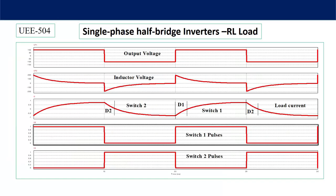In the output voltage waveform, we have positive output voltage and negative output voltage. Though the load is changed from resistive to RL load, the output voltage waveform remains the same. That is why the inverter is known as a voltage source inverter — the output voltage remains constant and is independent of the load.